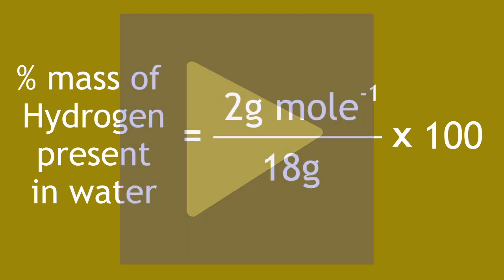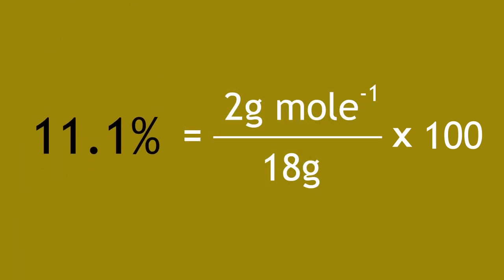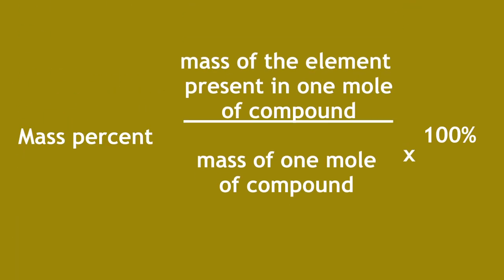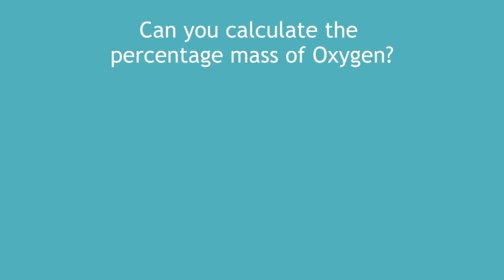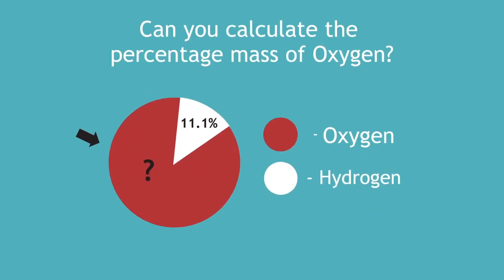The correct answer is 11.1%. You should be able to work out the oxygen in the same way, but it isn't necessary to do this. Here's a challenge. Can you calculate the percent mass of oxygen? Pause and continue when you know the answer.